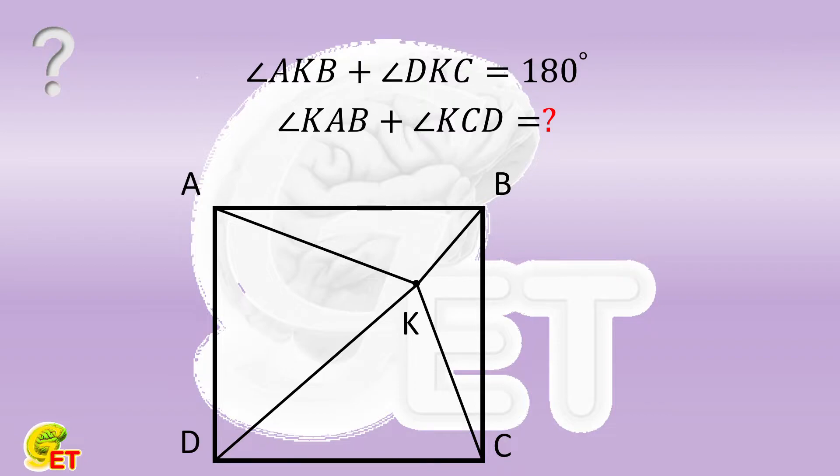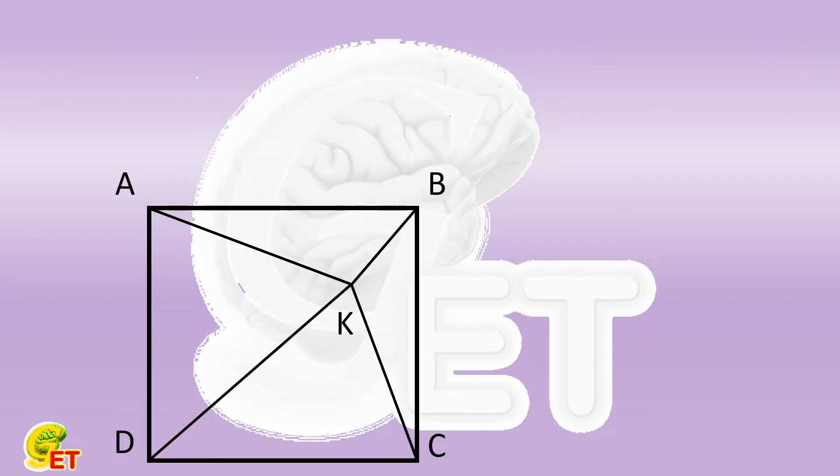To address this question, we first add several auxiliary lines to the figure. First, we make the circumscribed circle of triangle ABK. And then, crossing point A, we plot a line parallel to DK and intersect this circumscribed circle at point R.